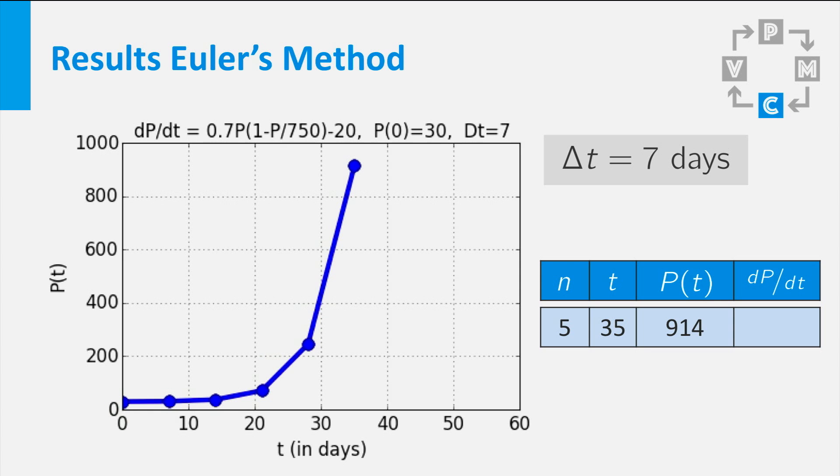P becomes 914 fish. And oops, the slope is negative all of a sudden. The reason for that is that a P of 914 fish is way over the equilibrium value of approximately 720 fish.